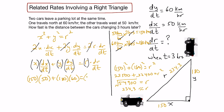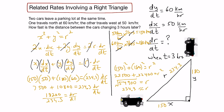Plugging everything in: 150(50) plus 180(60) equals 234.3 times dr/dt, which gives 7,500 plus 10,800 equals 234.3 times dr/dt. Adding those gives 18,300 divided by 234.3, which equals approximately 75.2 kilometers per hour for dr/dt.